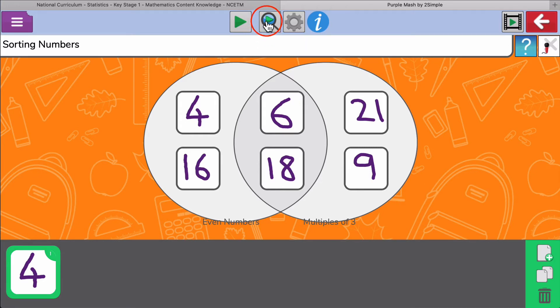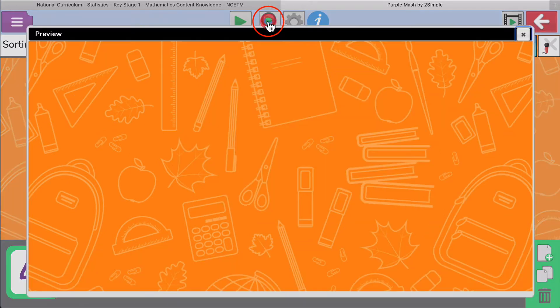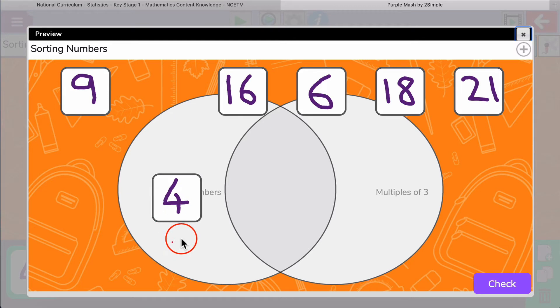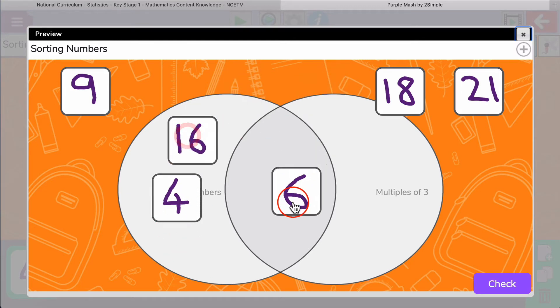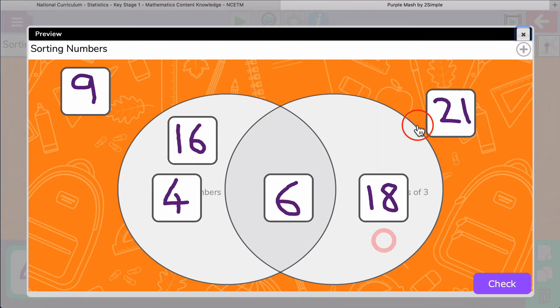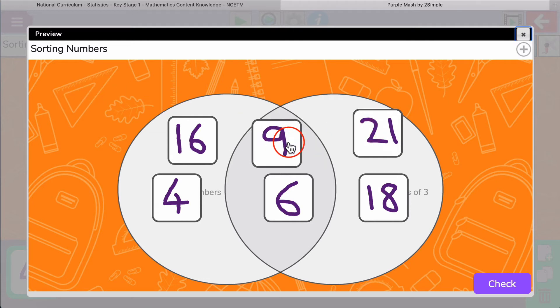So I can preview that now by clicking on the magnifying glass preview at the top here, and as you can see the children will be dragging things in like this. Just get a couple right and a couple wrong. We check and you can see it will mark it for the children as well, which is great.